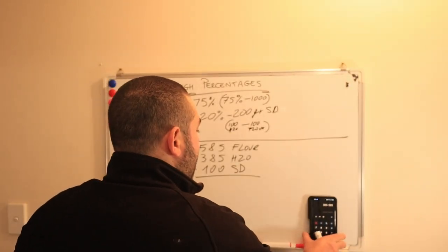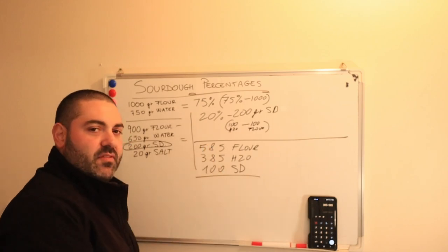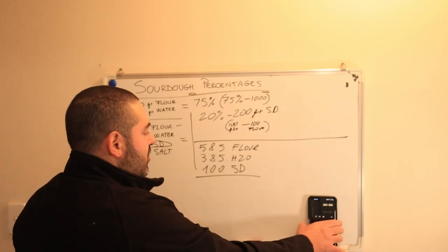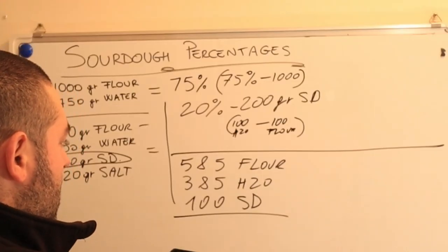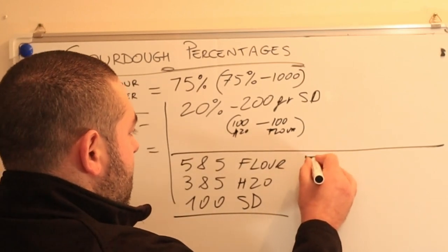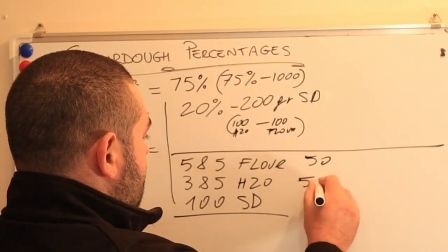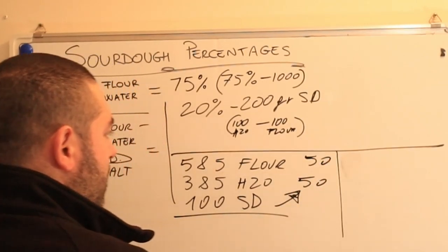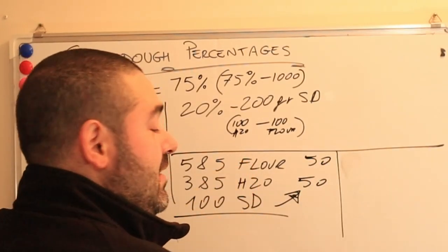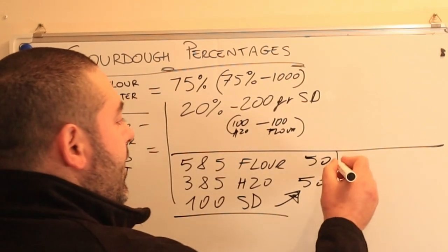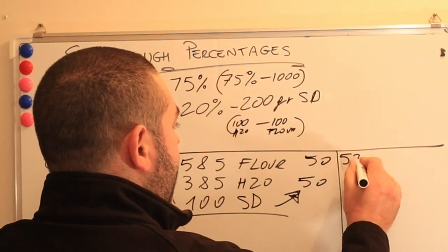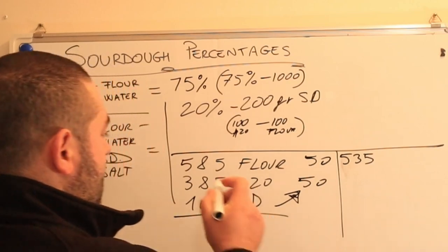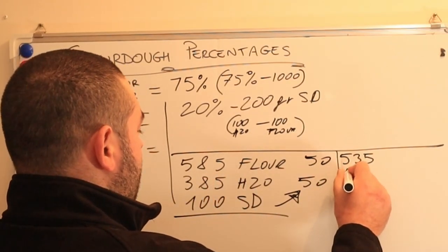But now we need to also account for an extra 50 grams of water and an extra 50 grams of flour. So once we do that, we need to add 50 grams here, and we need to add 50 grams here, which comes from the sourdough culture. So we have 585 plus 50 grams equals to 635. And this one equals to 435.